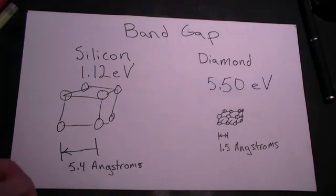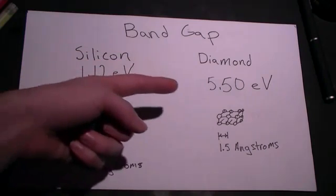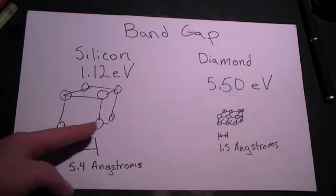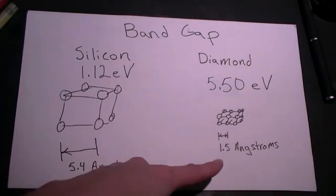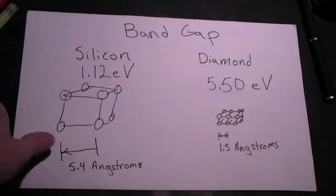For instance, silicon is at 1.12 electron volts, well below the visible spectrum, although infrared light will pass directly through a silicon wafer. Diamond, on the other hand, is well above the visible spectrum, so all light in the visible spectrum will pass right through.